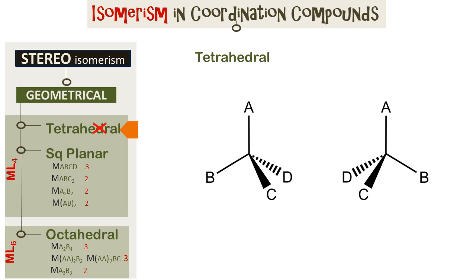We start with geometrical isomers and look at the tetrahedral shape coordination compounds first. In these compounds we do not see geometrical isomerism. The reason is that if we rearrange B, D, C, or A in any manner, the angle between them remains at 109 degrees — it does not change. So geometrical isomers are not possible for tetrahedral complexes.